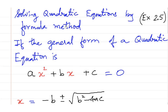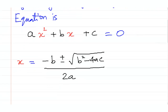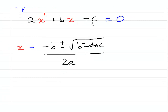In this video we are going to see how to solve quadratic equations by the formula method, discussed in exercise 2.5. The general form of the quadratic equation is ax² + bx + c = 0, where a is not equal to 0 and a, b, and c are real numbers. We can directly find the value of x using the formula: x = (-b ± √(b² - 4ac)) / 2a.